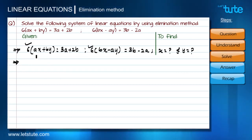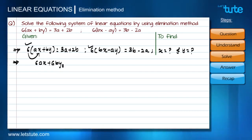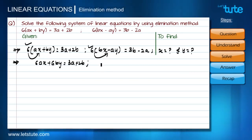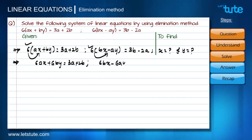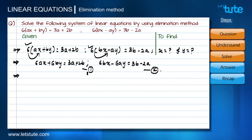Let's write these two equations properly by opening the brackets so that six is multiplied with both terms. This gives: six·ax plus six·by equals three·a plus two·b. Similarly, the second equation becomes: six·bx minus six·ay equals three·b minus two·a.